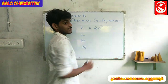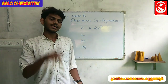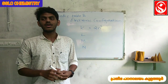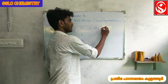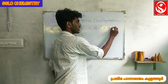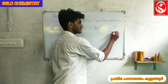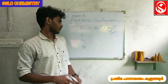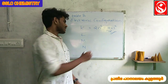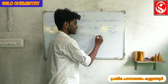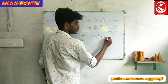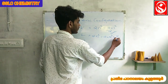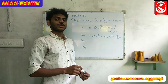In the shell, the formula is 2n squared. For n equals 1 (K shell): 2 into 1 squared equals 2 electrons. For the L shell: 2 into 2 squared equals 2 into 4, which is 8 electrons. L shell holds 8 electrons.